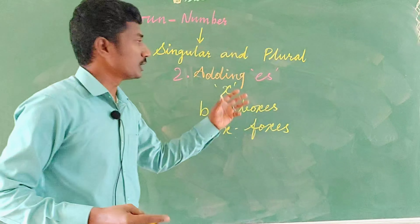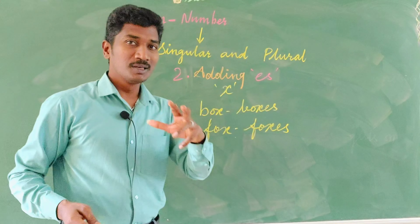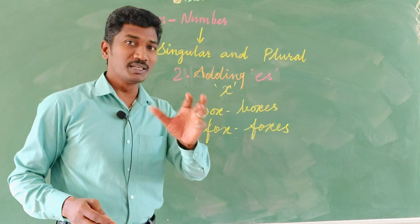If we are very clear with these singular and plural rules, while writing we will not have difficulty with spelling. Spelling mistakes we will not make if we are thorough with singular and plural. This same thing goes with verbs also, which we will see one by one. Next, we will go to the third rule.